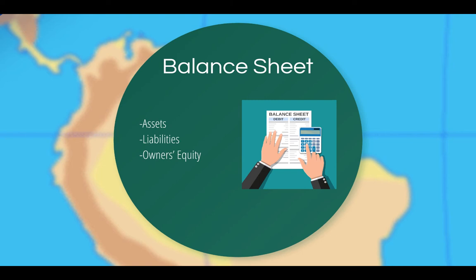The balance sheet reflects the assets, liabilities, and owner's equity at a given point in time. The balance sheet equates assets with liabilities plus owner's equity. As in the case of the income statement, logistics can affect the balance sheet of an organization in several major ways. For instance, order cycle time, order completion rate, and invoice accuracy can influence the speed in which one's customers pay their invoices, thus directly affecting the cash and accounts receivables categories on the balance sheet.